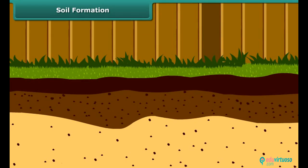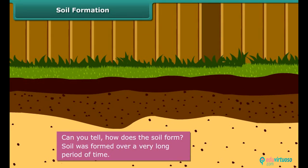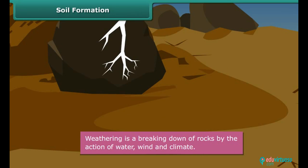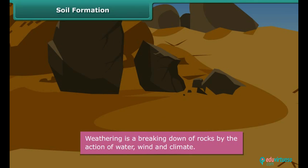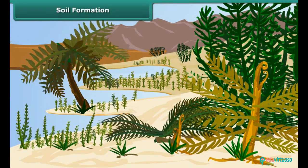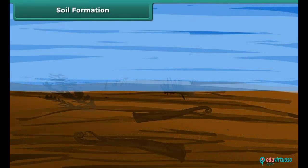Soil Formation. Can you tell how does the soil form? Well, soil was formed over a very long period of time. Large rocks were broken down into smaller pieces and finally to soil by the action of wind, water and climate in a process called weathering. Also, decaying of dead plants and remains of animals made the soil thick and rich, and eventually it became support for life.